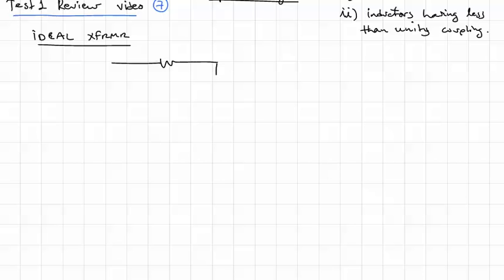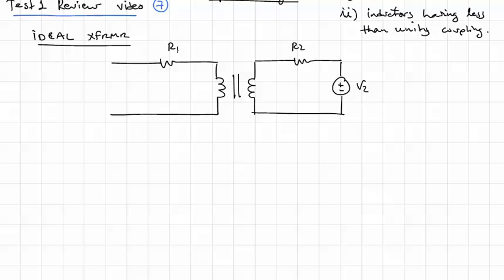The classic one here would be you have a resistance on the primary in series with the primary. And we have some resistance on the secondary. We'll put a voltage source on the secondary too. Call that V2, R2, R1, V1.